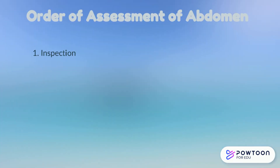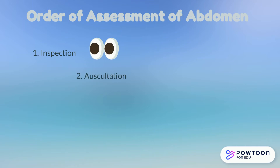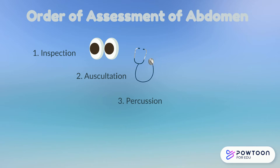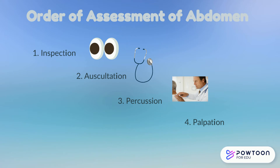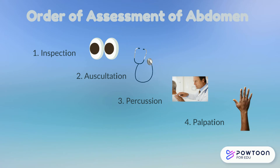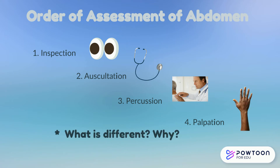The steps of the abdominal assessment are a little different than your other assessments. We always begin with inspection, but with the abdomen, we then go to auscultation, followed by percussion and palpation. Do you remember why?